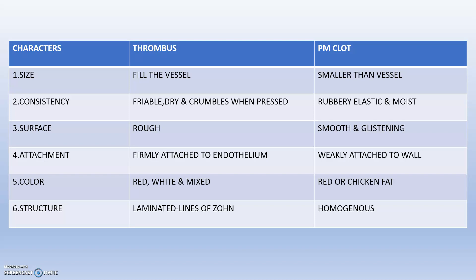The next point is consistency. The thrombus will be friable, dry, and crumbling. But the postmortem clot will be rubbery, elastic, and moist. Regarding surface, the thrombus will be rough, whereas the postmortem clot will be smooth and glistening, reflecting more light.